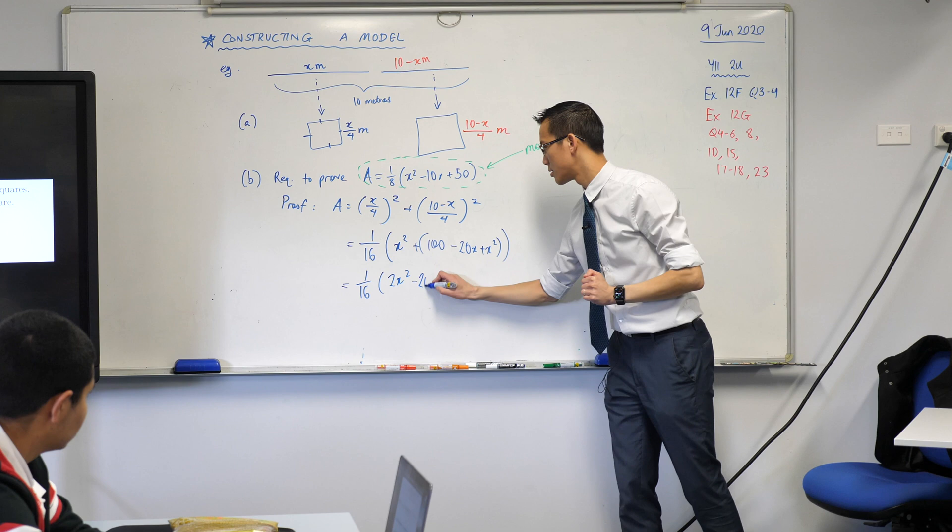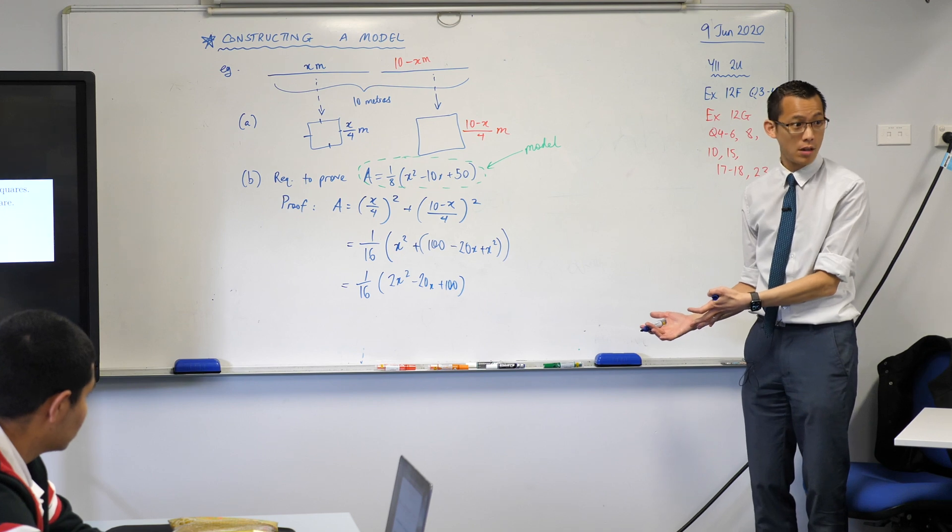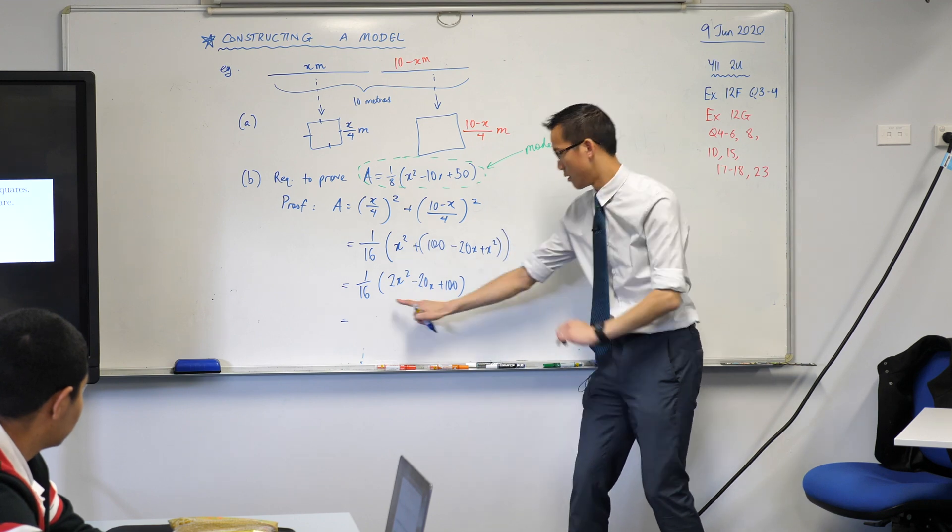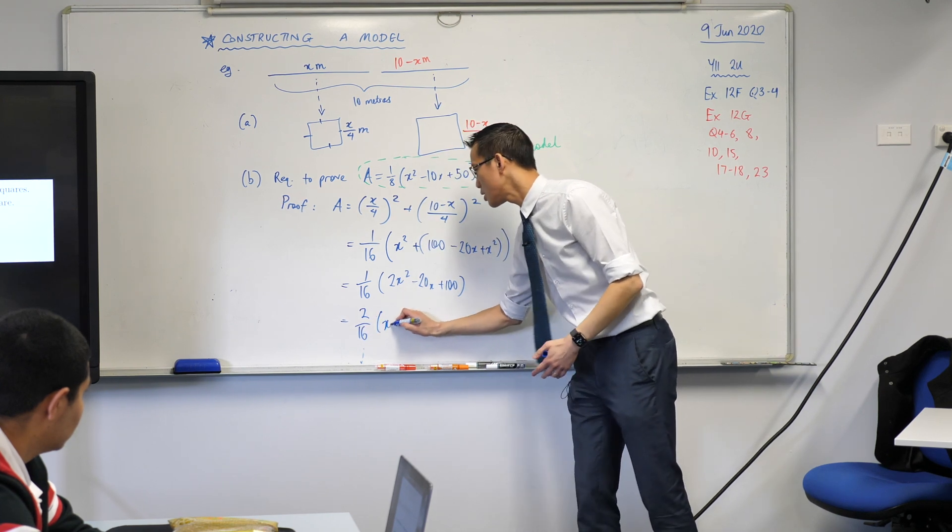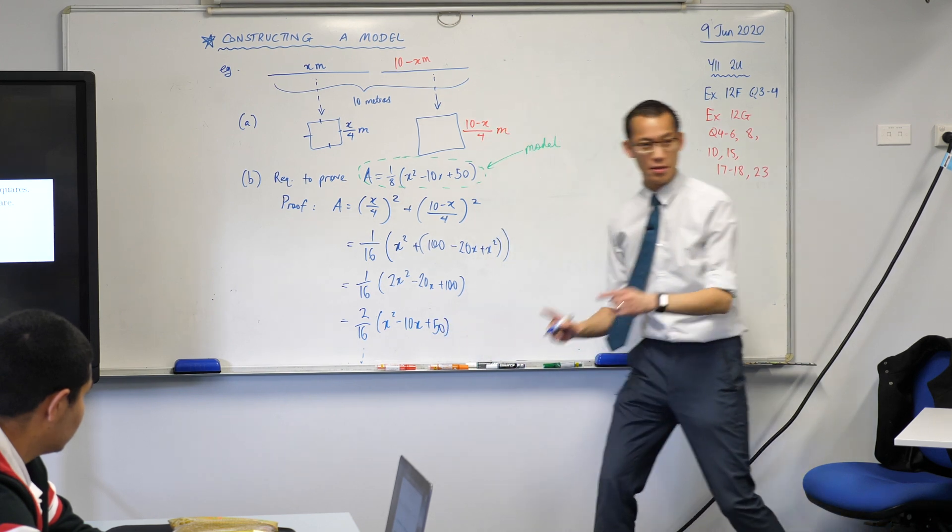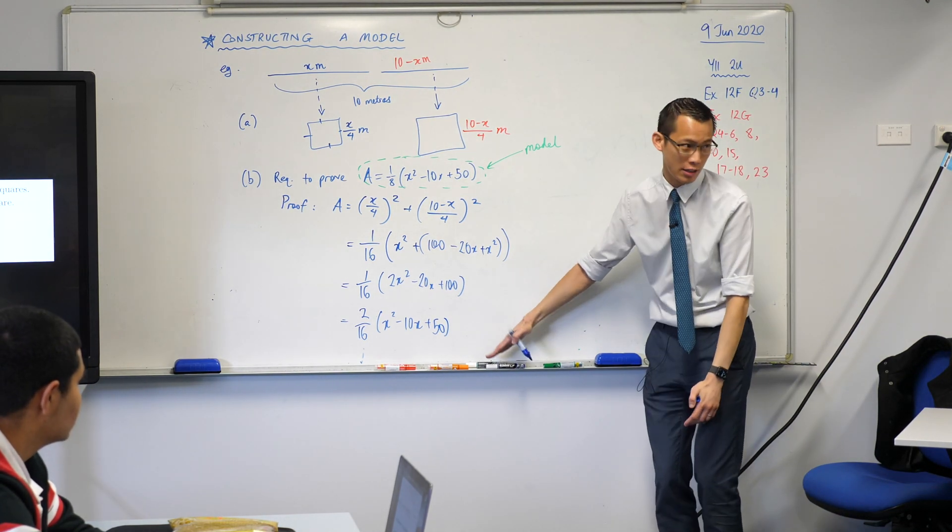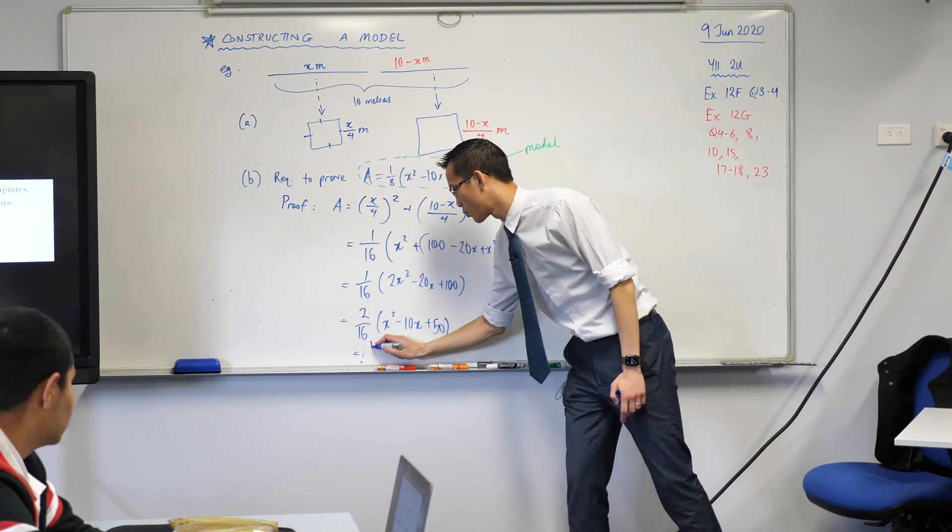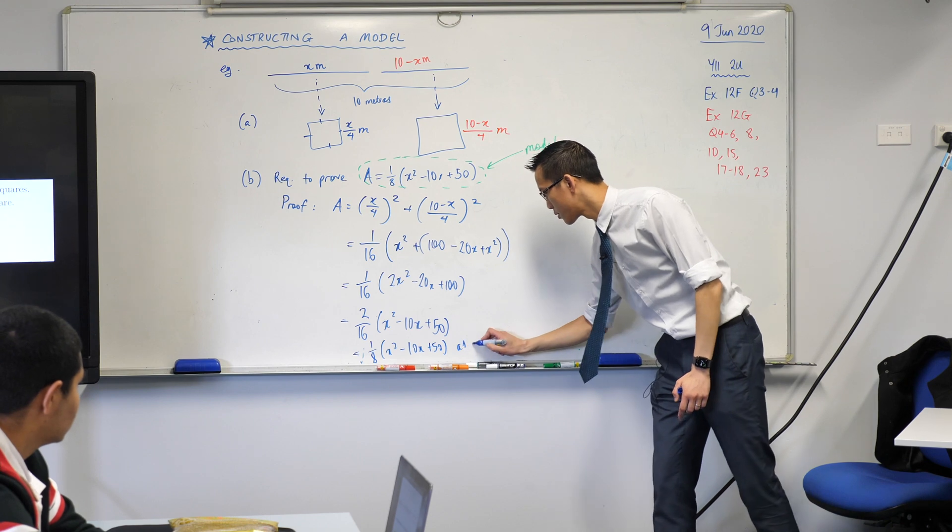All right, when I collect like terms I'm going to get 2x². I'll put this in order: I've got + 100 up the back. Is this looking like what I want it to look like? Yeah, I'm very close. To get to here, all I need to do is factorize out the—these are all even, aren't they? 2, -20, 100, so I'm going to factorize that out. It is worth saying that even though they were trying to help us out by giving us the model, because you know where you're headed, you can't leave any steps out. You've got to show every single thing you do. Now I'm going to finish and say it's 1/8(x² - 10x + 50) as required.